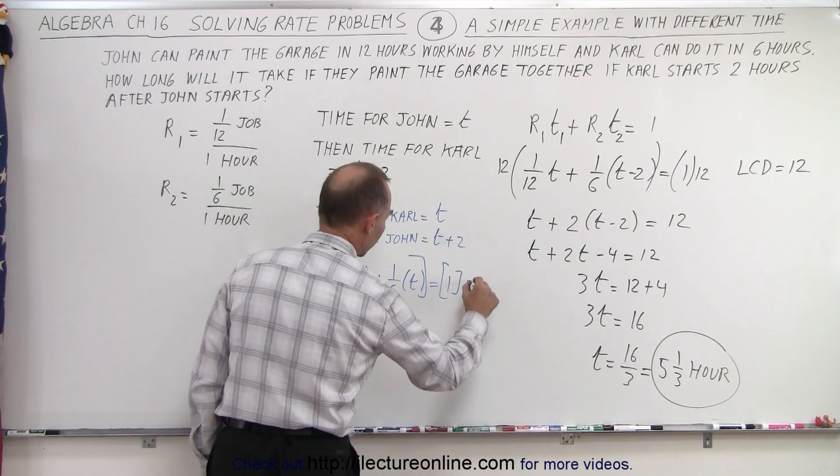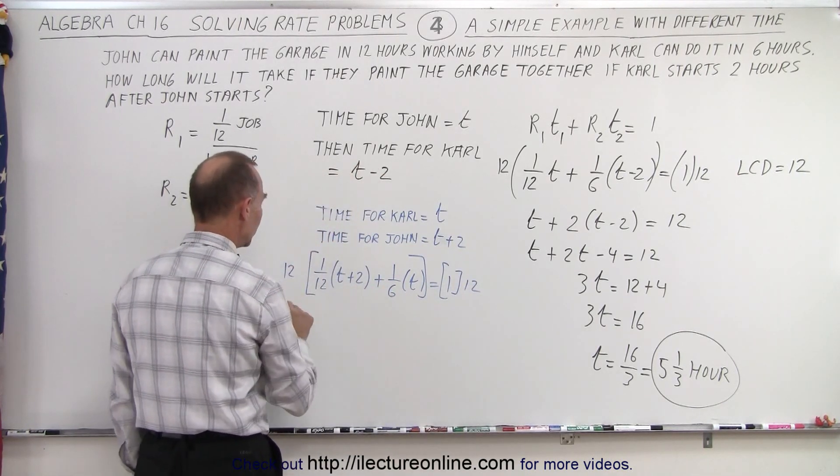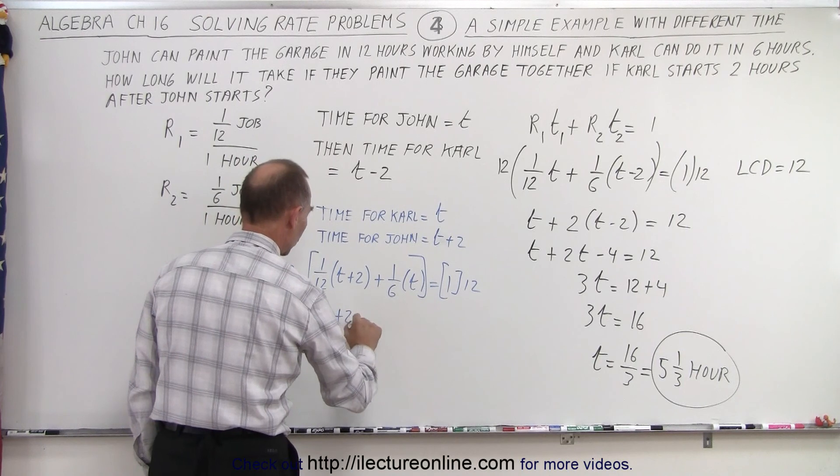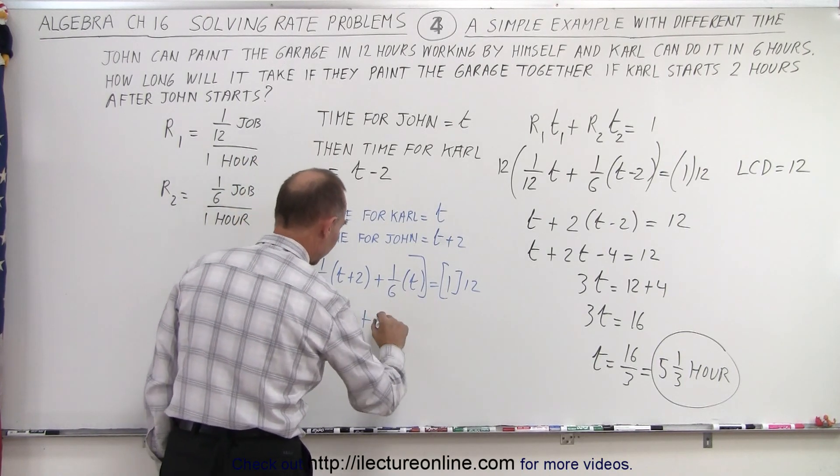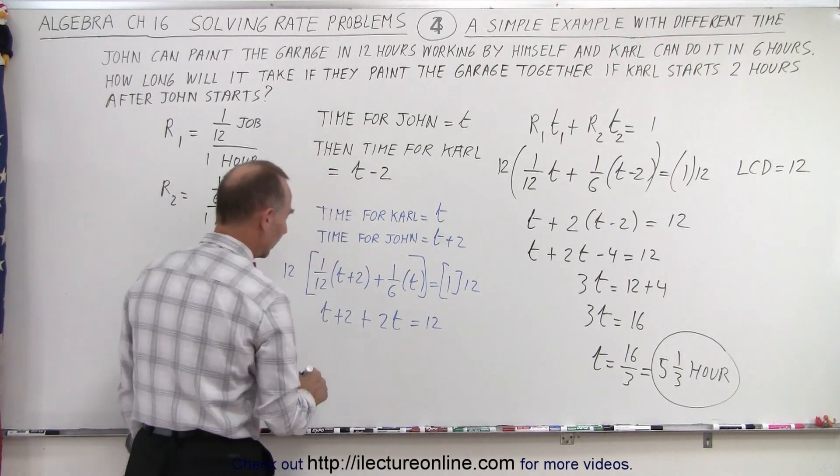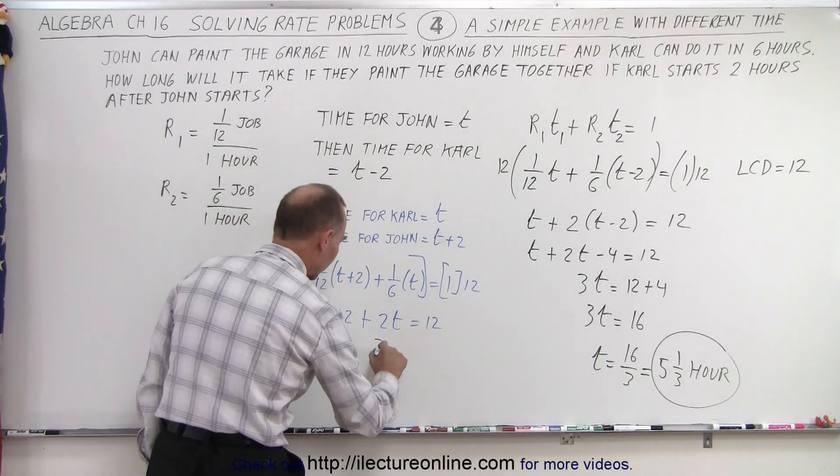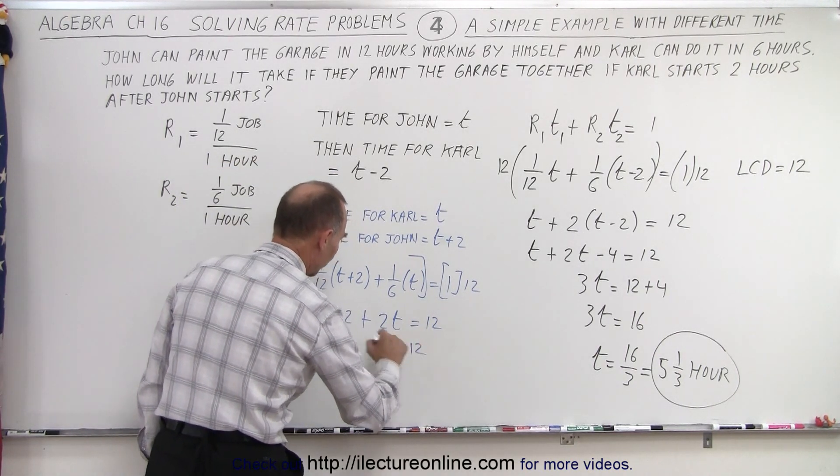When we do that, we get t plus 2 plus 2t equals 12. Then we add the t's together, we get 3t equals 12. Bring the 2 to the other side, minus 2, or 3t equals 10, or t equals 3 and 1/3.